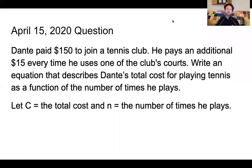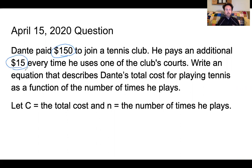Welcome back, everybody. It is Thursday, so we're going to go over yesterday's question as well as introduce today's question. Yesterday we learned about Dante, who pays $150 to join a tennis club and then an additional $15 every time he uses one of the club's courts. We've been asked to write an equation that describes total cost for playing tennis as a function of the number of times he plays.